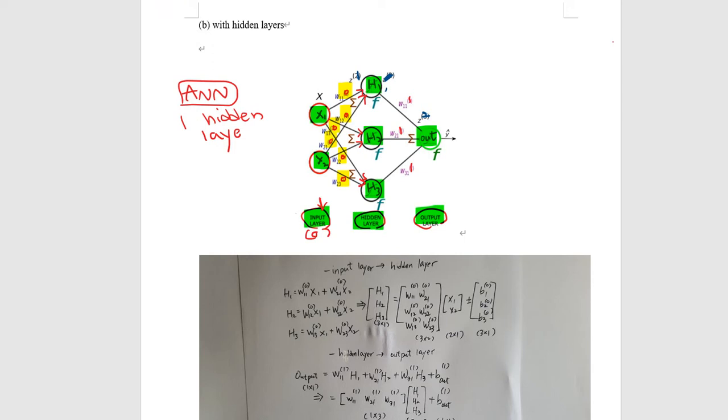This is the notation we're going to follow throughout my YouTube channel from now on, so please be familiar with these notations. We also have hidden layers, and we get another superscript which is one. That means these weights are coming from the first layer. It's very easy to understand why you use zero and one as superscripts.